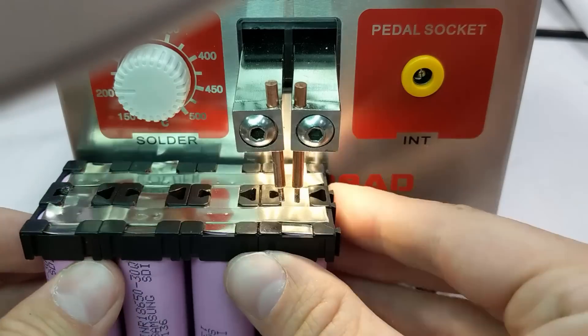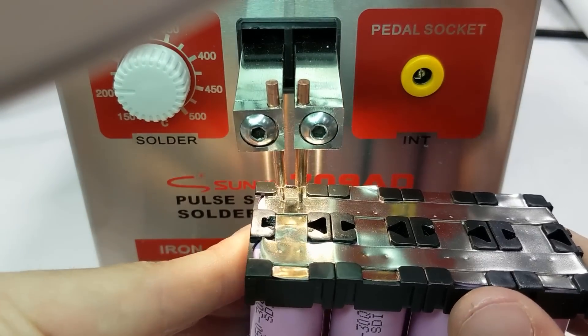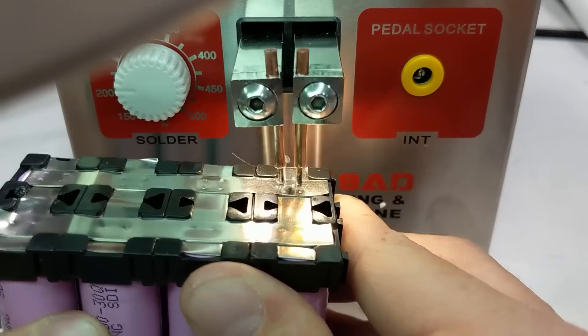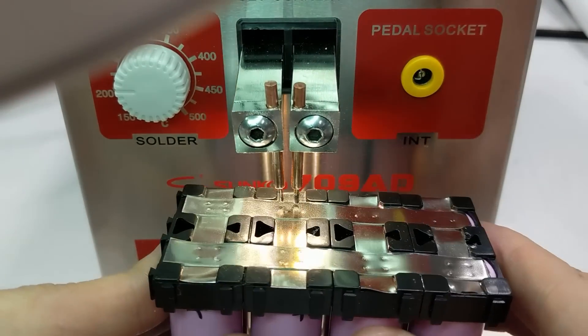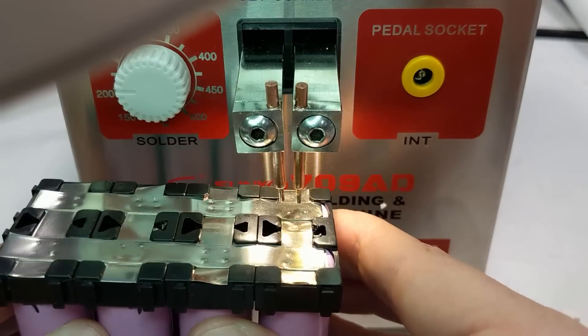One thing to note: if the spot welder starts to make bad welds, or the weld tips start to look really black and oxidized, then give it a quick file. The tips are made of copper, so they'll clean right up.